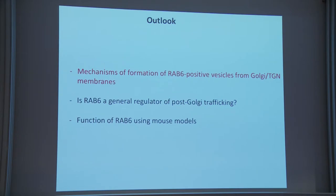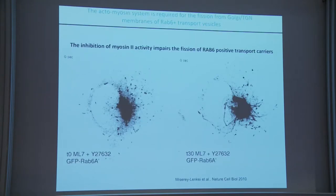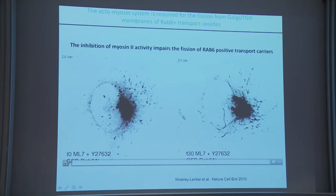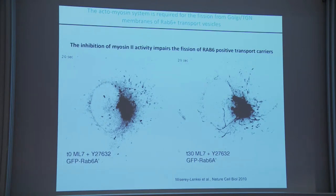The first part of my talk presents data on mechanisms underlying the formation of RAB6-positive vesicles from Golgi TGN membrane. What we published several years ago is that the dynamin system is required for this function. In a control cell stably expressing GFP-RAB6A, you can see the Golgi and all these vesicles that move away or return to the Golgi. Now if you block myosin with an inhibitor, you start to see the appearance of tubes still connected to the Golgi membrane — these correspond to vesicles that cannot undergo fission from the Golgi.